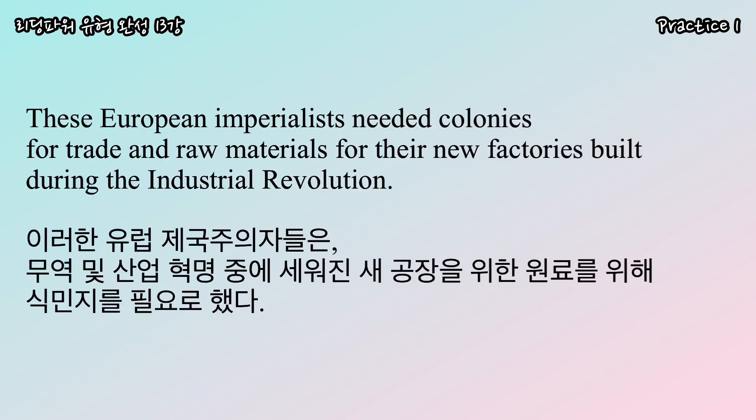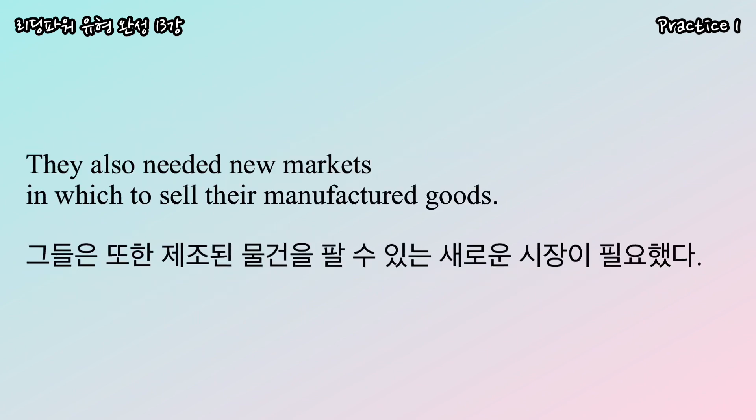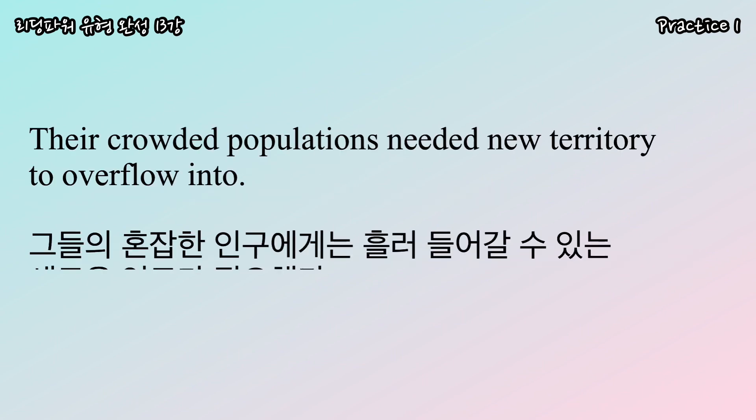These European imperialists needed colonies for trade and raw materials for their new factories built during the Industrial Revolution. They also needed new markets in which to sell their manufactured goods. Their crowded populations needed new territory to overflow into.